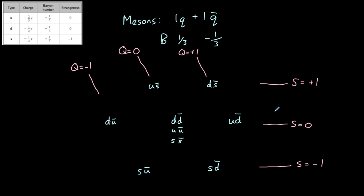Those that are only made of up, down, anti-up, or anti-down quarks we call pions, and they have a strangeness of zero because they don't have any strange quarks. Those that contain strange or anti-strange quarks we call kaons, and these particles will have a strangeness.